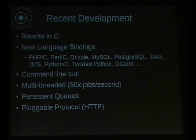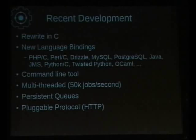I also developed a command line tool. While doing the C server, I added multithreading support so we can process a lot more jobs. We've benchmarked it on an eight-core machine up to 50,000 jobs a second. We also developed persistent queues, so when you're dealing with background jobs — if your server crashes, you don't want to lose all the jobs that were sitting in it. You can use the persistent queue to store jobs in things like SQLite, MySQL, Drizzle, or Tokyo Cabinet. Experimentally, there's pluggable protocol support to give it an HTTP interface.